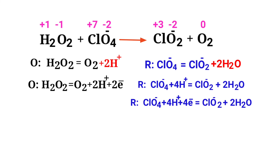The electrons lost in the oxidation half reaction must equal the electrons gained in the reduction half reaction. The oxidation half reaction has two electrons, while the reduction half reaction has four. To balance, multiply the oxidation half reaction by a coefficient of 2.